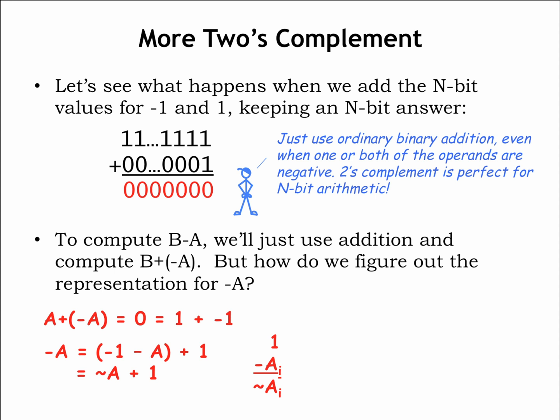If a particular bit a_i is 0, then 1 minus a_i is 1, and if a_i is 1, then 1 minus a_i is 0. So in each column, the result is the bitwise complement of a, which we'll write using the C language bitwise complement operator, tilde. So we see that negative a equals the bitwise complement of a plus 1. Ta-da!